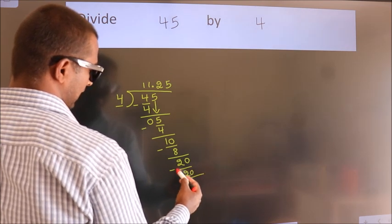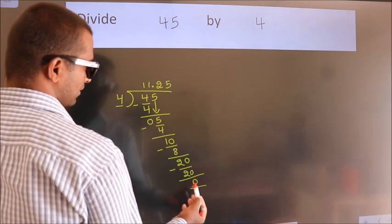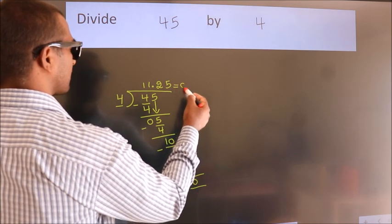Now we subtract. We get 0. We got remainder 0, so this is our quotient.